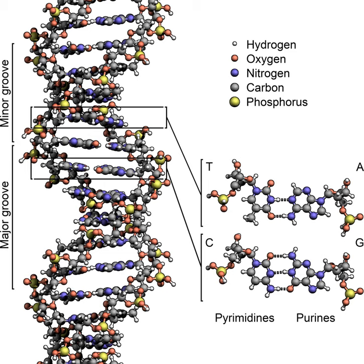In eukaryotes, this process usually occurs during meiosis, when the two sister chromatids are paired together in the centre of the cell. Recombination allows chromosomes to exchange genetic information and produces new combinations of genes, which increases the efficiency of selection and can be important in the rapid evolution of new proteins. Genetic recombination can also be involved in DNA repair, particularly in the cell's response to double-strand breaks.